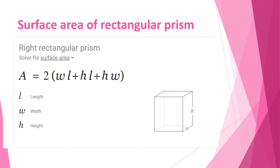To find the surface area of a rectangular prism we have the following formula: A equals 2 times (width plus height) times length plus height times length plus height times width, where L is the length, W is the width, and H is the height. This will rarely come out in your TEAS exam, but it's always good to know.